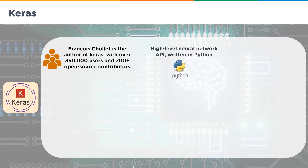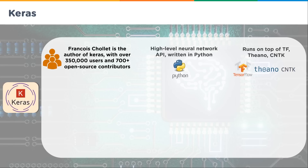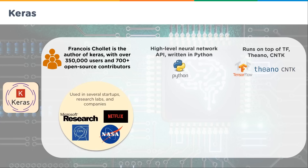What makes Keras interesting is that it runs on top of TensorFlow, Theano, and CNTK — it uses their neural networks underneath, and you use Keras to define all these packages. So if you're running TensorFlow and put Keras on top of it, you have both the benefits of Keras and all the tools in TensorFlow. It's used in several startup research labs and companies — Microsoft Research, Netflix, NASA, and CERN are all using Keras for data processing and deep learning.